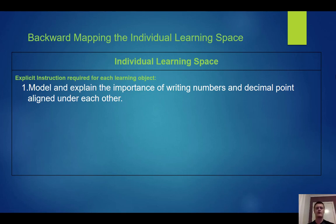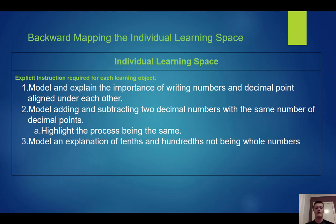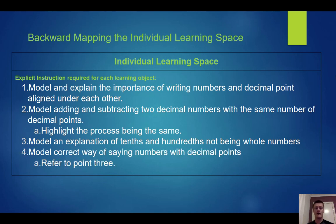The reason we break this down is that each key concept generally equates to a learning object, and the explicit instruction for each learning object maps back to that previous section. For explicit instruction I need to: model writing numbers and decimal points aligned directly under each other; model adding and subtracting two decimal numbers highlighting that the process is the same as with whole numbers; model and discuss why tenths and hundredths are not whole numbers; and model the correct way of saying numbers with decimal points.